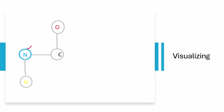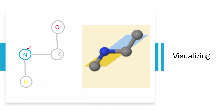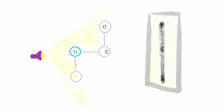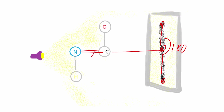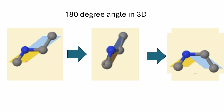Let's visualize the peptide bond in 3D with nitrogen, carbon, oxygen, and hydrogen. When you shine light from the side, its shadow shows nitrogen and carbon forming a single spot, with oxygen on one side and hydrogen on the other. Between these two arms you can see an angle of 180 degrees, which is why the peptide bond is fixed at 180 degrees in its trans configuration.